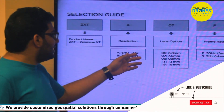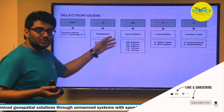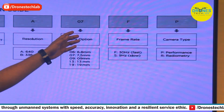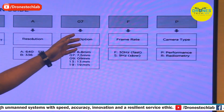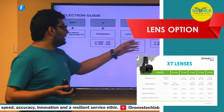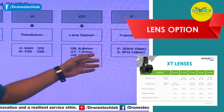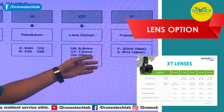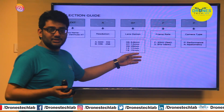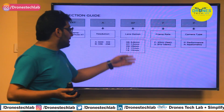The resolution difference indicates the sensor size of the Zenmuse XT thermal camera. The fifth and sixth characters indicate the lens option, which has five different types: 06 indicates 6.8mm, 07 indicates 7.5mm, 09 indicates 9mm, 13 indicates 13mm, and 19 indicates 19mm.